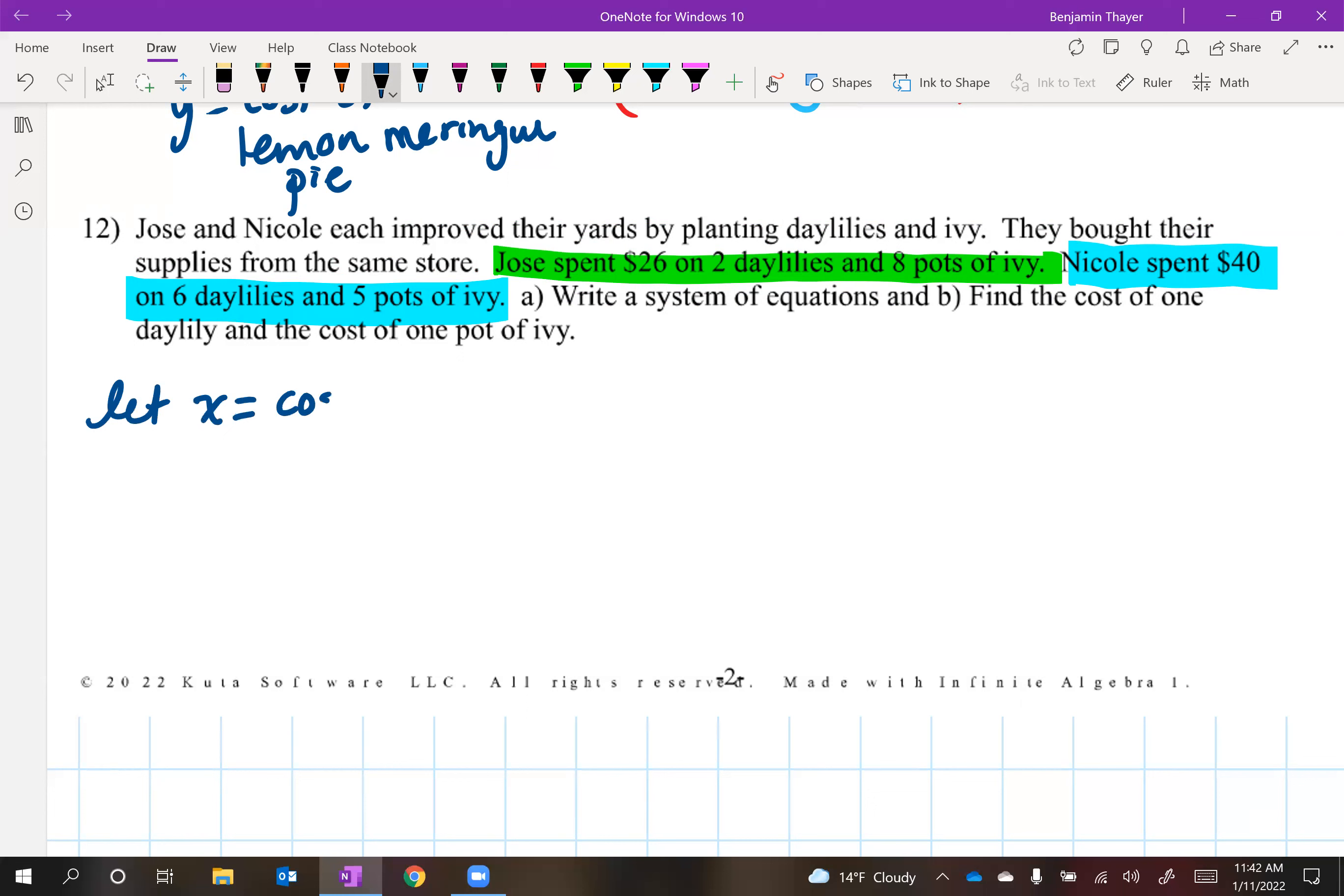Let x equal the cost of one daylily. And y can equal the cost of one pot of ivy. All right. So we've got our variables defined. Next, let's write our sentence from the green one. Again, standard form is a strong hint here. So you can pause this video and see if your team came up with the right equation. Hit the pause button and then we'll resume shortly.